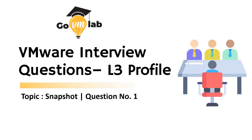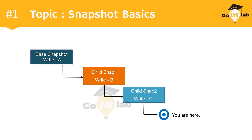Welcome to our series on VMware interview questions for L3 and senior level profiles. Here goes question number one. Before we go into the question, let's understand this particular scenario. A virtual machine has a very first snapshot, considered to be the base snapshot, and a user has written data value A on that base snapshot. Then the user triggered another snapshot named child snap one, and written data value B on that delta disk. As you know, a snapshot is a point-in-time image with a disk for data changes and a memory file for memory-specific changes.